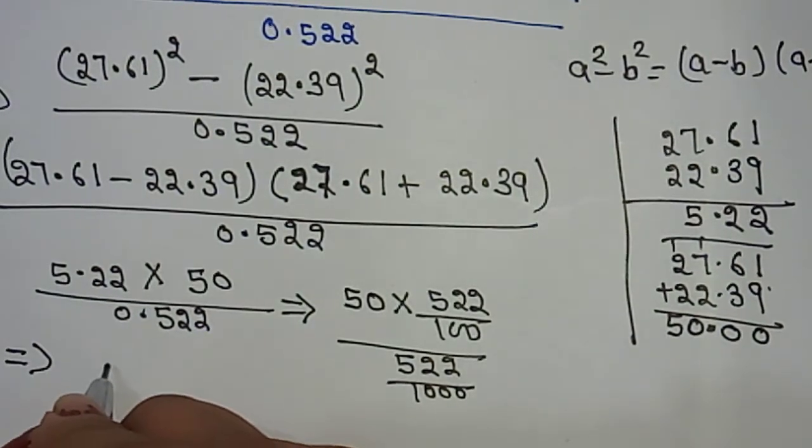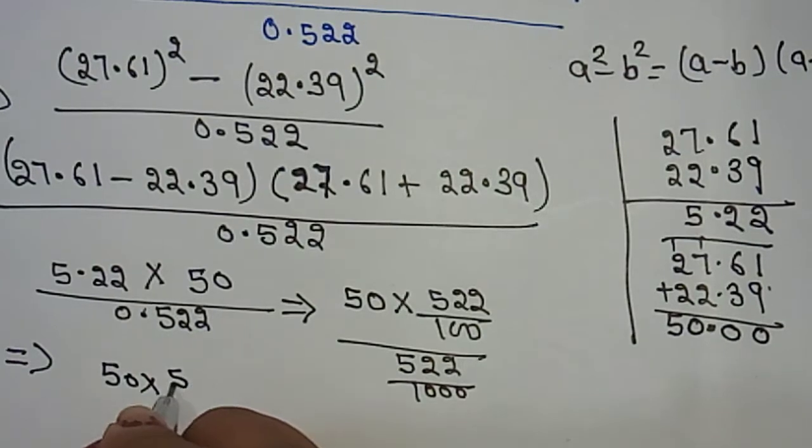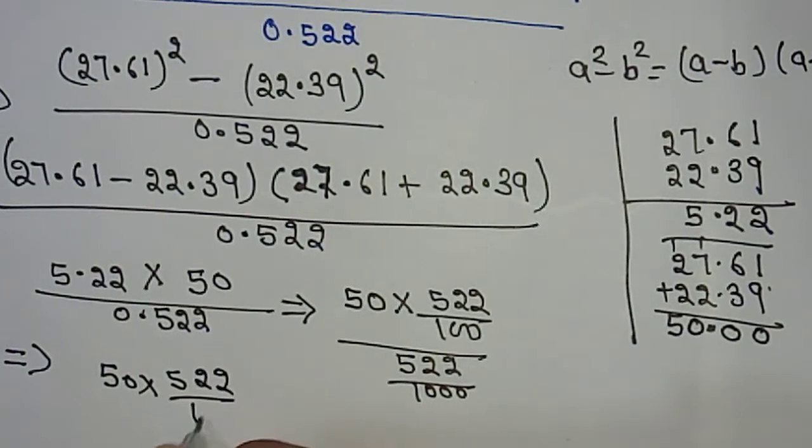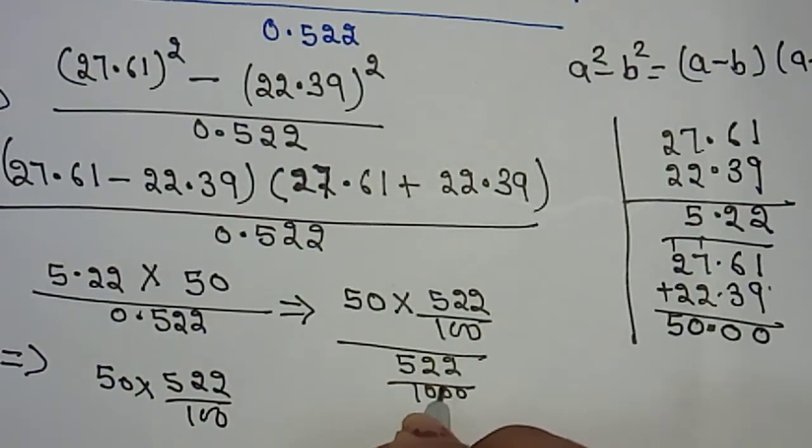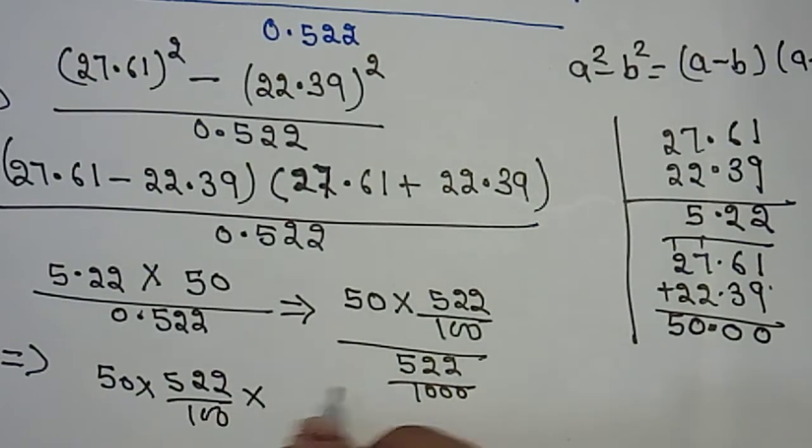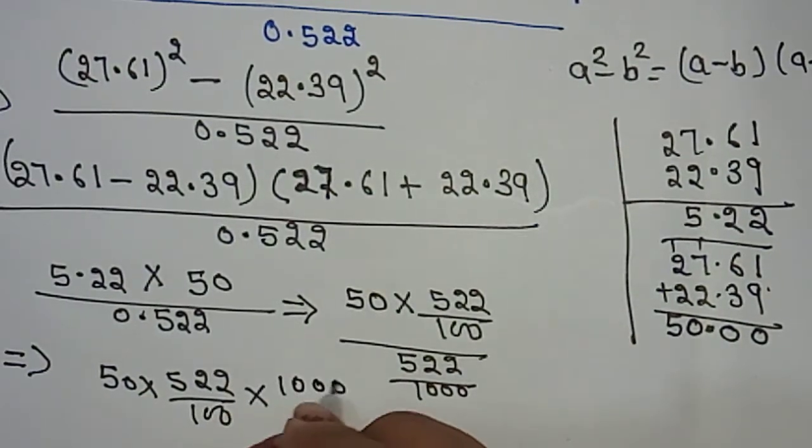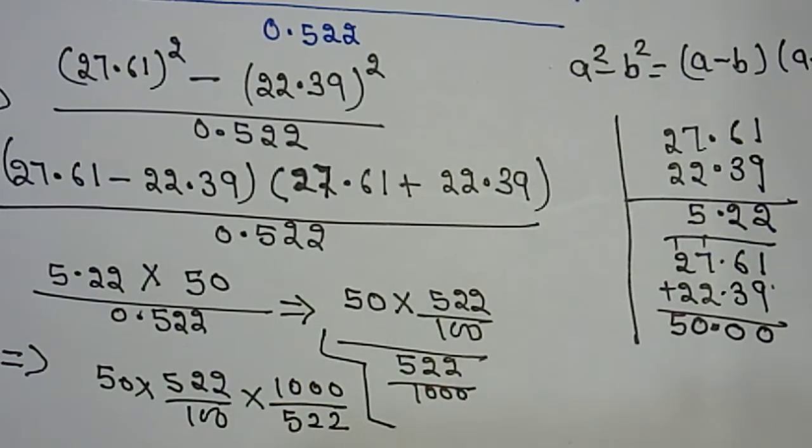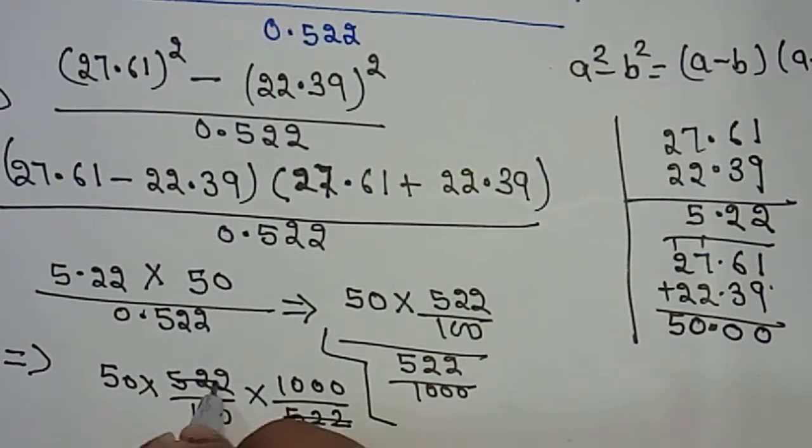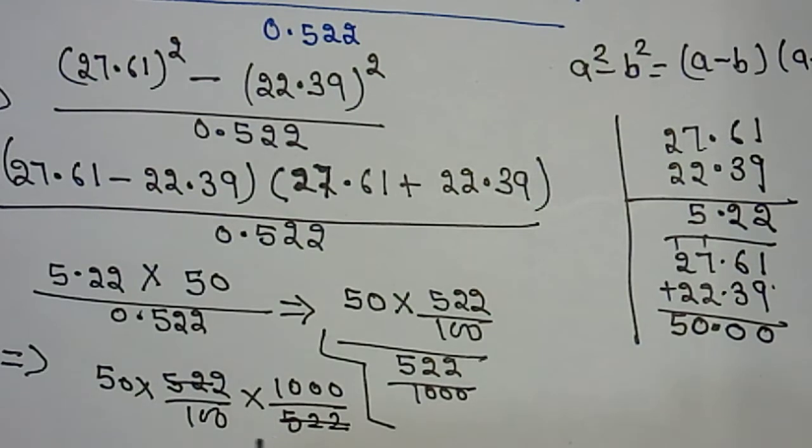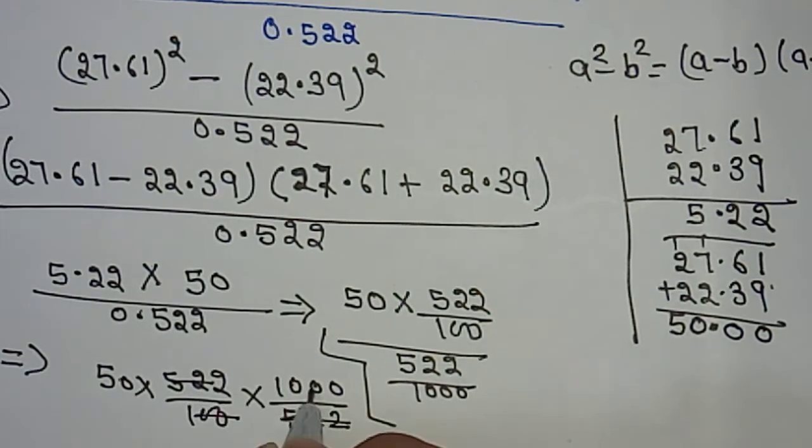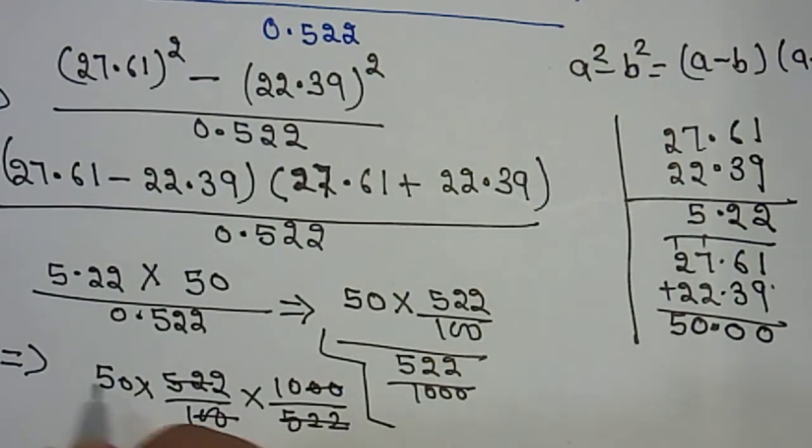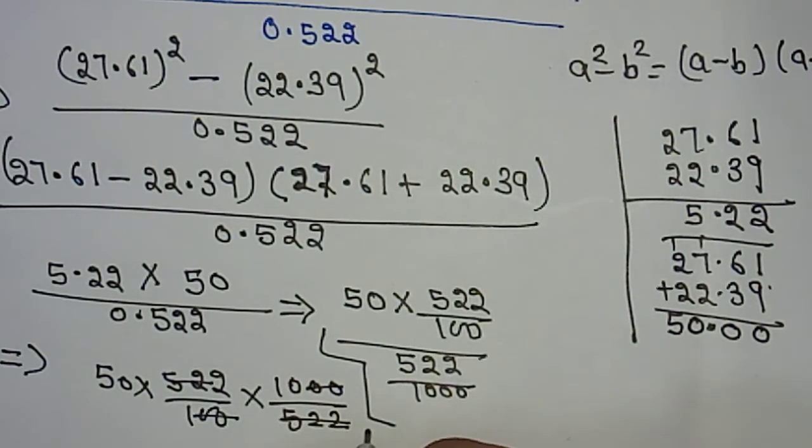So 50 × 522 upon 100. When we reciprocate it, it becomes 1000 upon 522. So 522 cancels out by 522, and the two zeros cancel out by these two zeros.